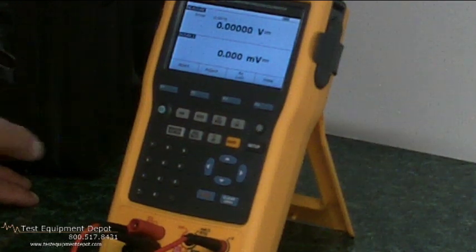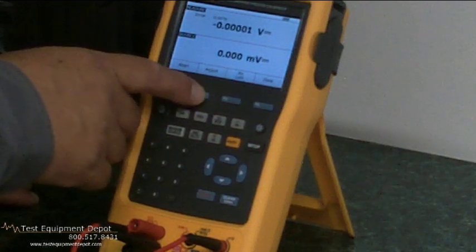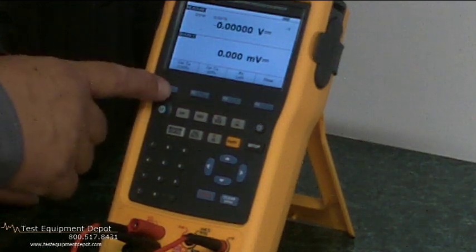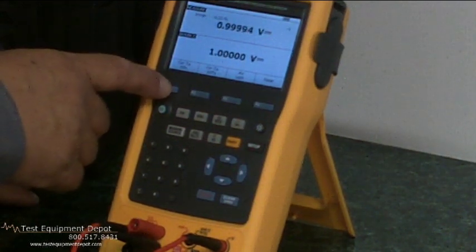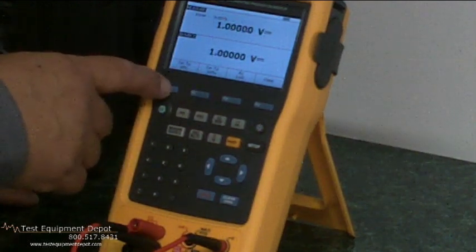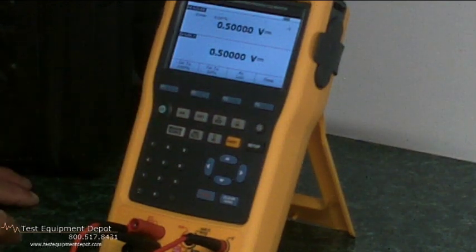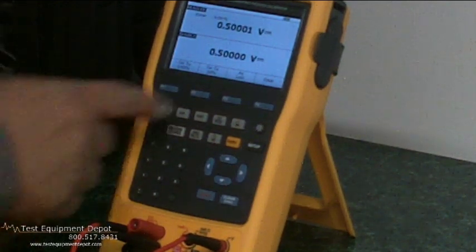Once the as-found calibration is done, if needed, we can do an adjustment. Push the adjust button, and notice that we can go to 100% of value with a push of a button. We can go to the zero percent, or we can go to 50% of value, again, with a push of one button.